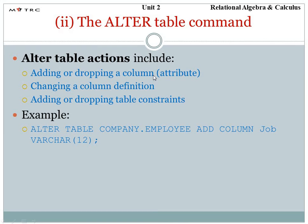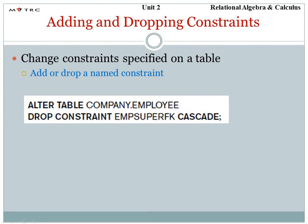The alter command is used if you change a value or attribute, or define a new value. We use the alter table command — for example, alter table company employee add column job with a variable type. You can also use alter to add or drop elements from a table, such as adding or dropping a column or constraint.